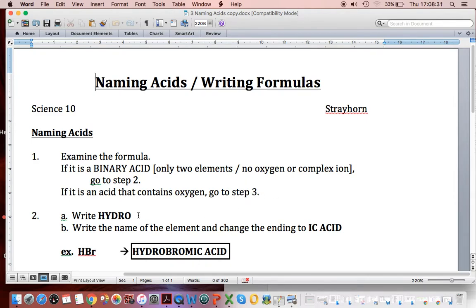Our steps are to write hydro. Hydro represents the hydrogen. And then we take the non-metal and change its ending to -ic acid. So here we see HBr. We've got to write hydro down. Then we have the Br. Bromine becomes bromic acid. And it becomes hydrobromic acid.